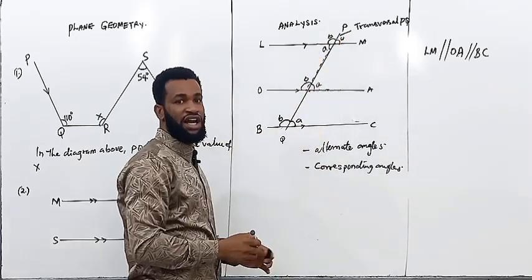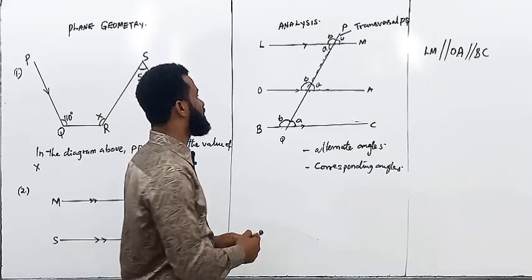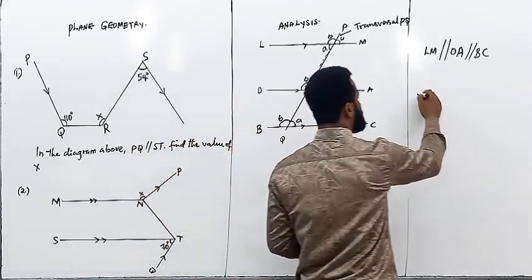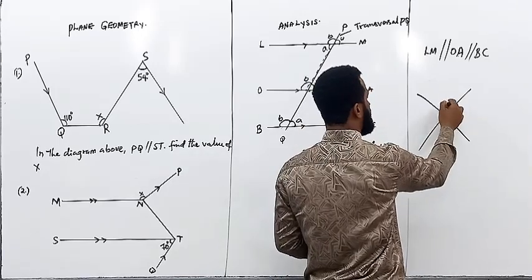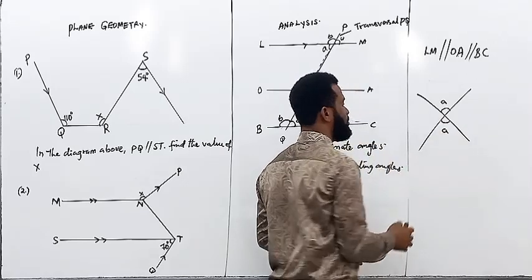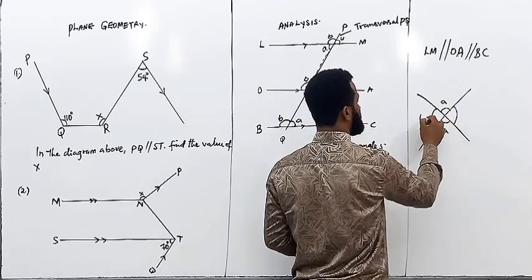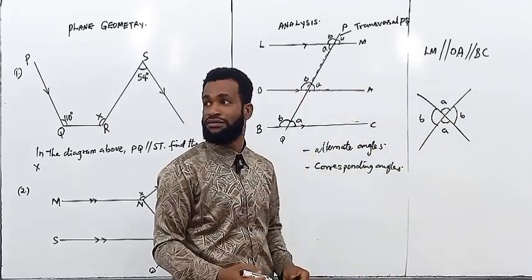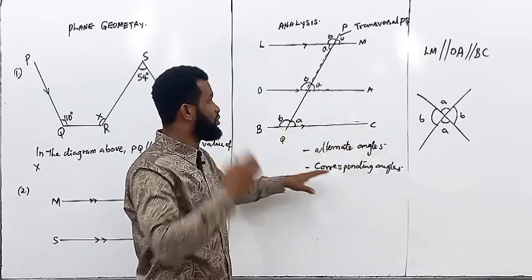There is another angle called vertically opposite. Whenever two straight lines cross each other, the angle on top must be the same as the angle below, and the angle on this side must be the same as the angle on the other side. These few things we have learned — including angles on a straight line — we are going to apply them in solving this problem.